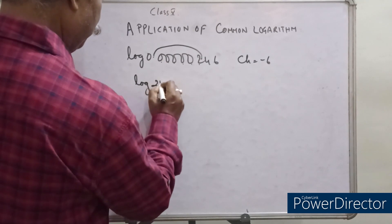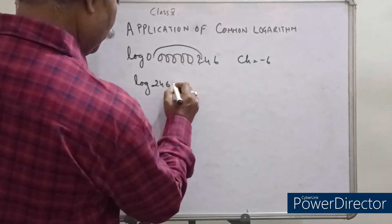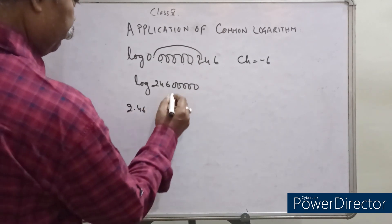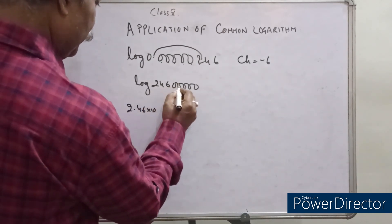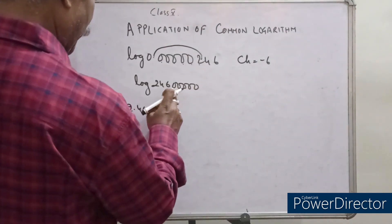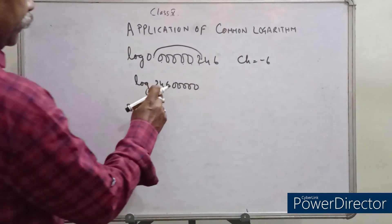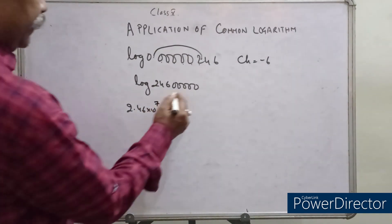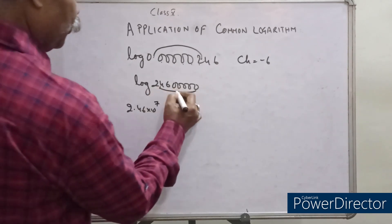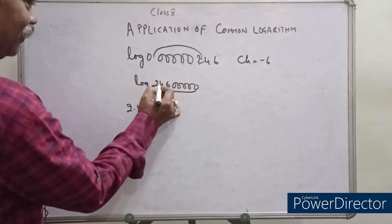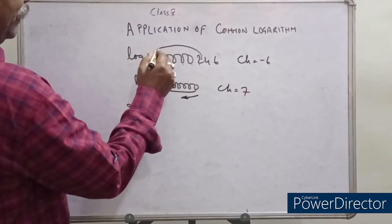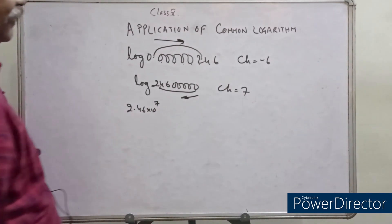For a large number like 24600000, in standard form it will be 2.46 into 10 to the power of 7, so the characteristics is 7. When you shift the decimal to the right direction, the characteristics is considered as positive. When you shift the decimal to the left direction, the characteristics is considered as negative.